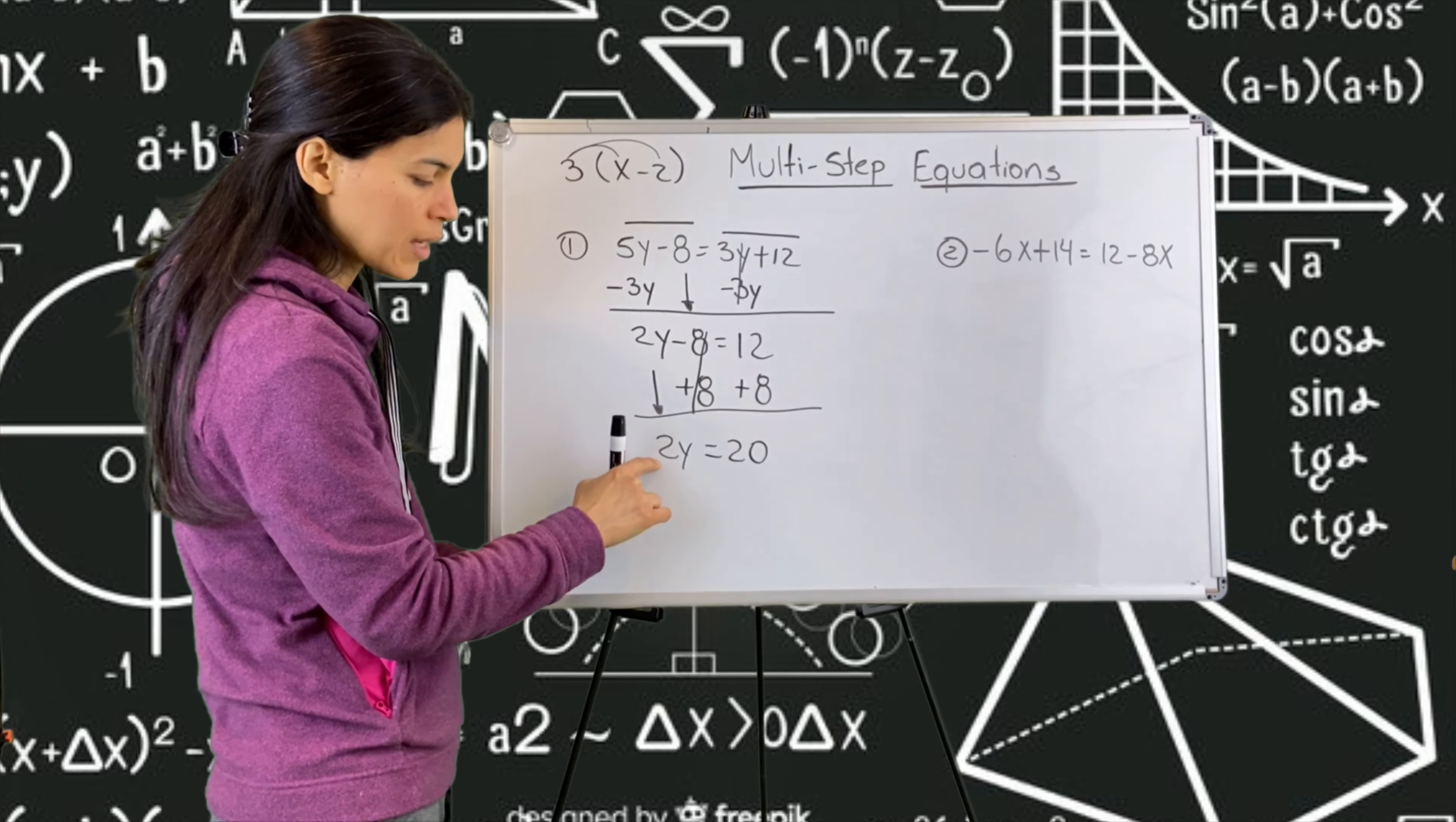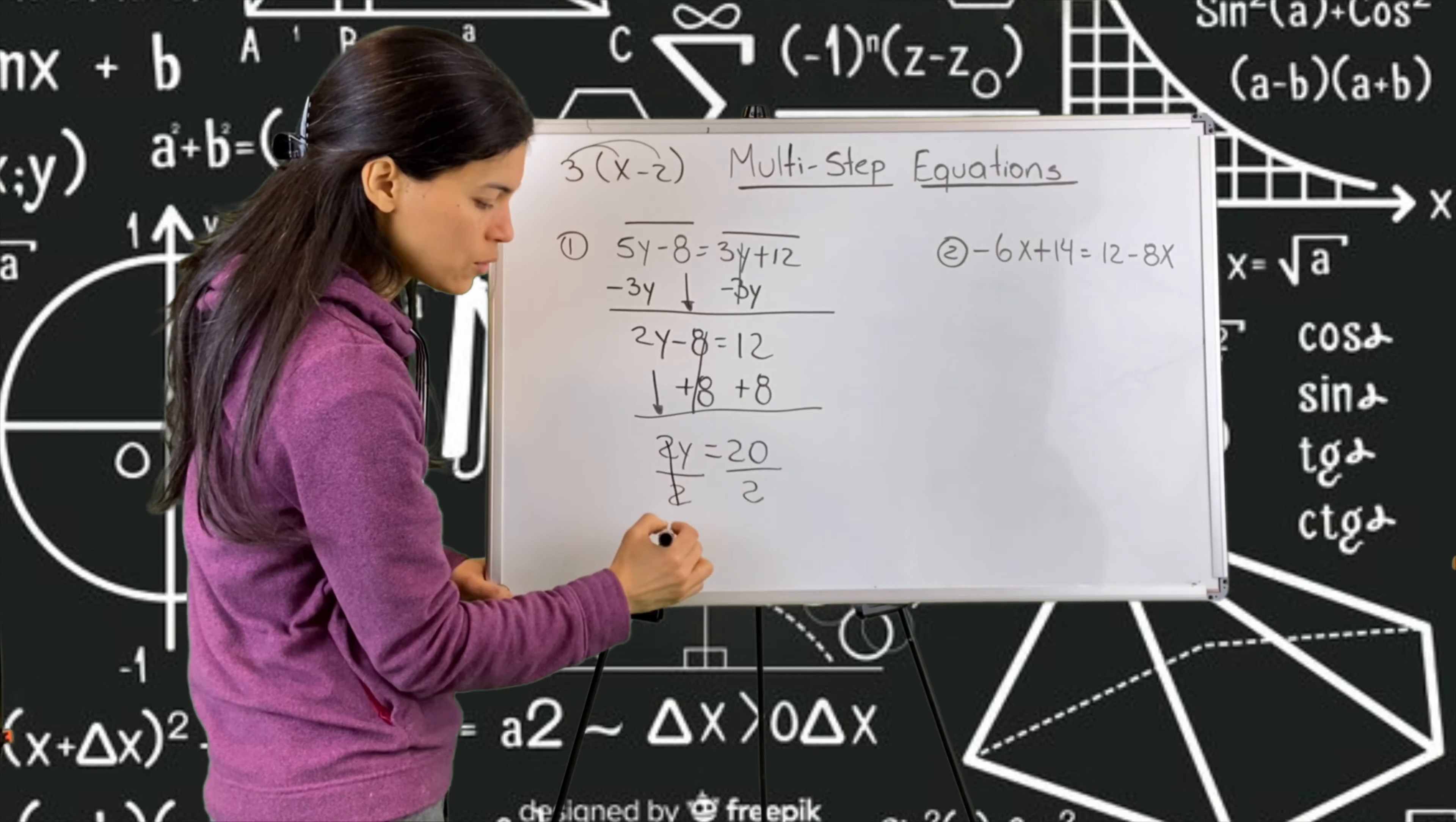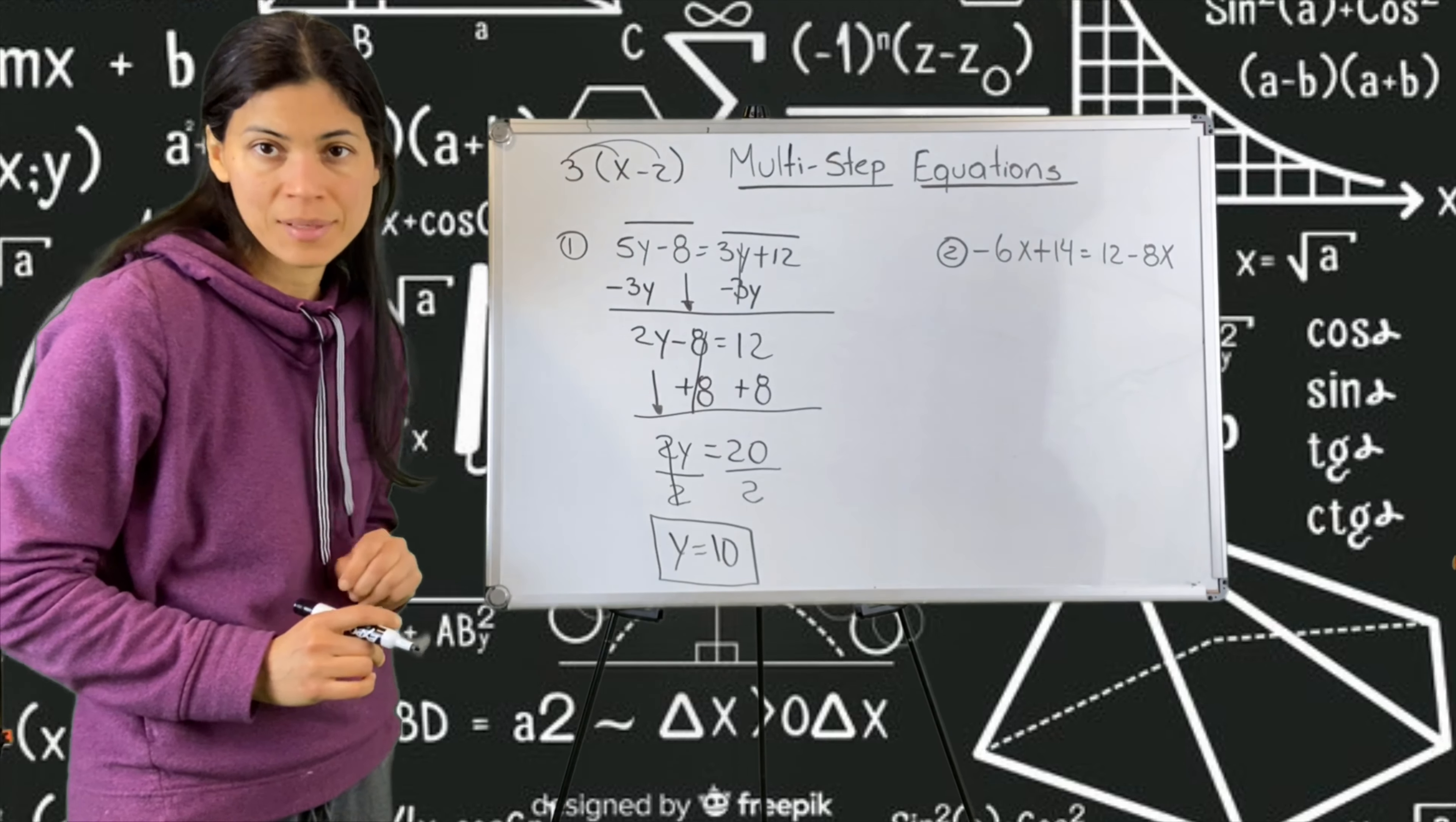I still have the two. I need to get rid of that two. Since there is no symbol between two and y, it's multiplication. And the inverse of multiplication is division. So I'm going to divide by two, both sides. Let's cancel these two. And I am left with the y by itself. And 20 divided by two is 10. Here you have number one.